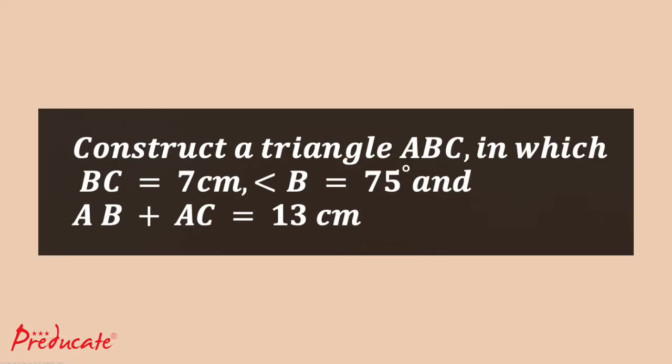Let's construct a triangle ABC in which BC is equal to 7 cm, angle B is equal to 75 degrees, and AB plus AC is equal to 13 cm.